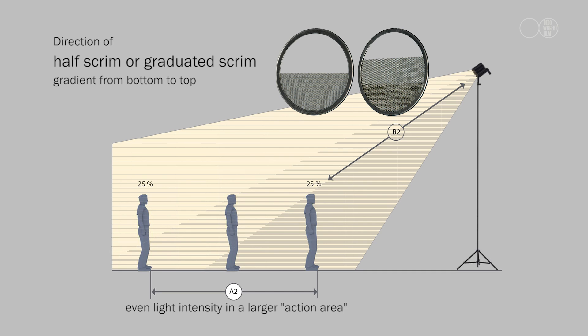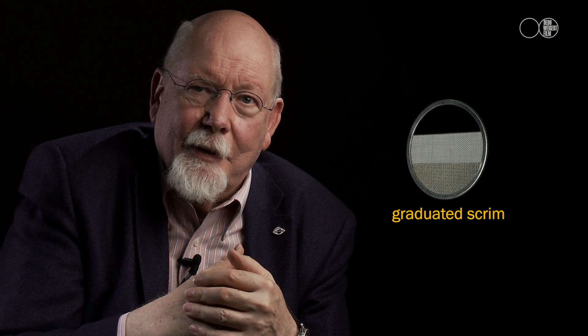Now there are some further tricks to cheat the square law in our normal working day. Scrims are wire nets which exist in different densities: one half, full, and double. Some of these are also cut in half, so that one half is open and the other half is covered by the net. When you use a focusing light in a downward-tilted position and your talent comes closer to the light, the intensity will rise drastically. The half scrim can help to minimize the intensity at closer distance. Another kind of scrim is called graduated scrim, with three steps of intensity, and that may work even a little bit better.